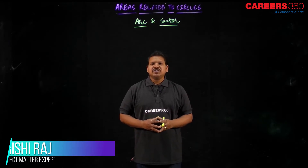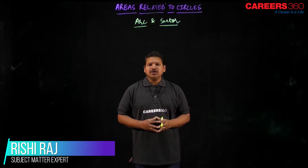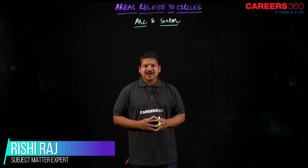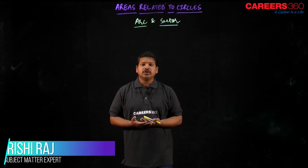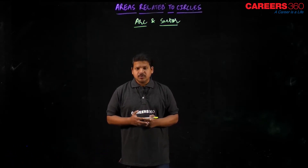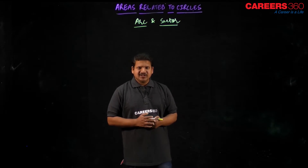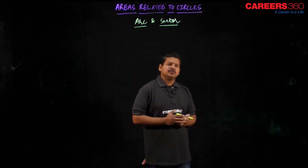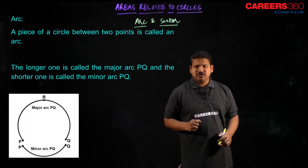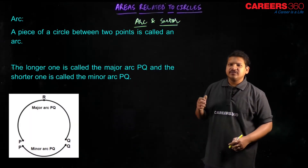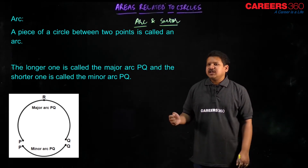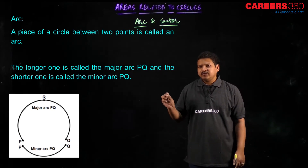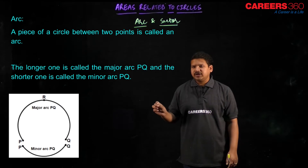Welcome back everyone. In this session we are going to look upon the arc and the sector — their definitions, and various dimensions based on those such as area, perimeter, and length. Firstly, let us have a look at the definition of arc, as we have read in the chapter of circles: a piece of a circle between two points is called an arc.